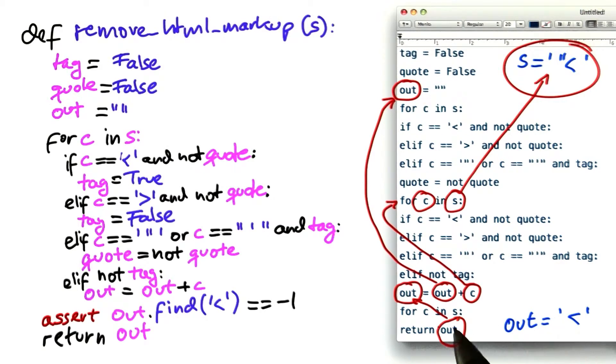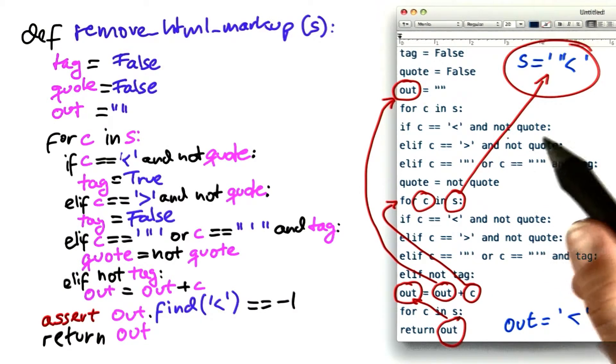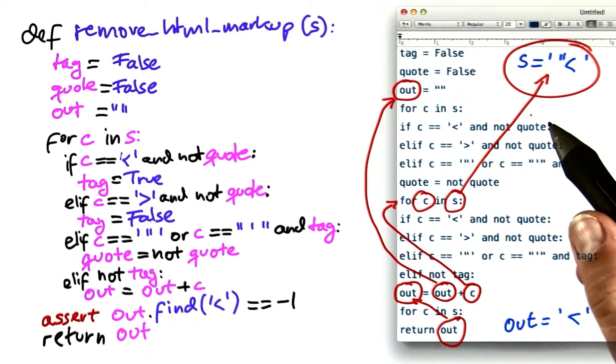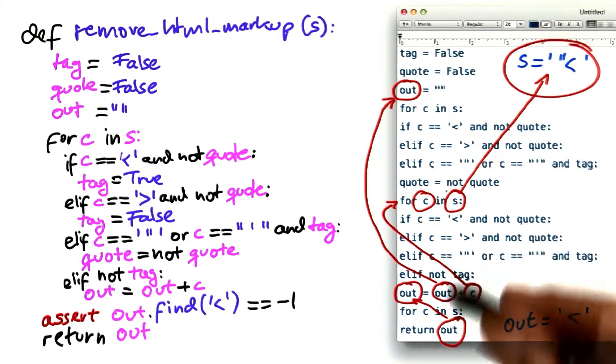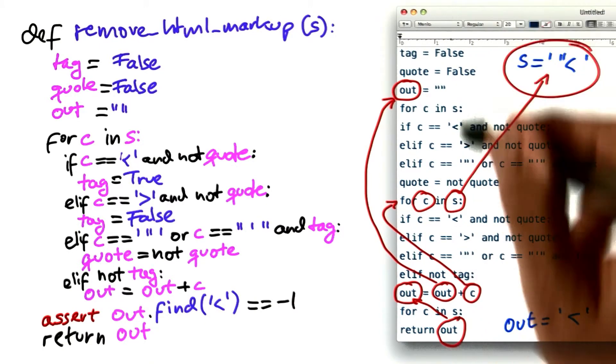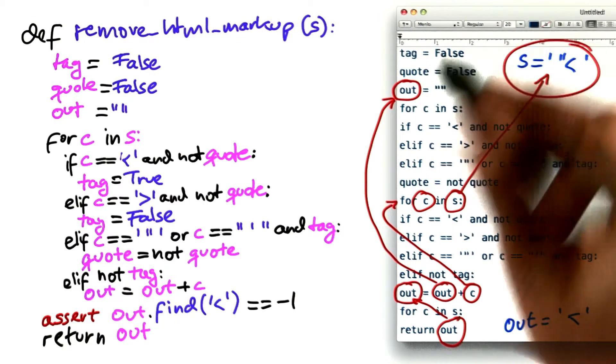Again, we can use these dependencies to build a slice. However, now the slice would be a dynamic slice, because it is built on the dynamic trace.